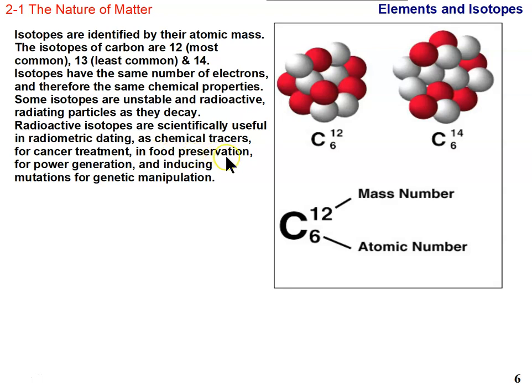We use radioactive isotopes to kill bacteria on food. For example, beef that's being processed can be irradiated to kill the bacteria so it will last longer on the shelf. Nuclear power plants, power generation, relies on radioactive isotopes like uranium. And inducing mutations—just like we can use radiation to treat cancer and kill cancer cells, radiation mutates DNA. We can use it to genetically manipulate living things, to cause mutations. Sometimes those mutations are good and sometimes they're bad.